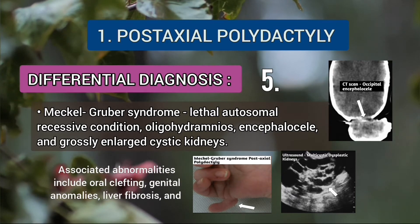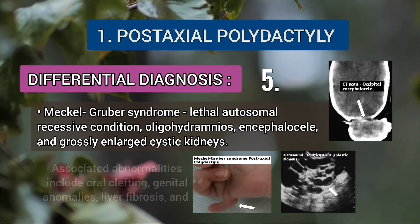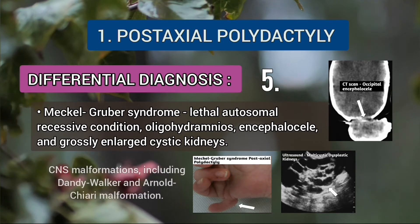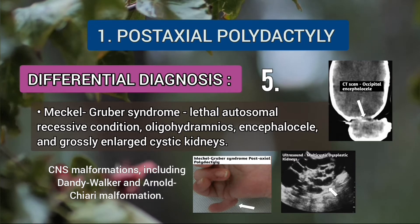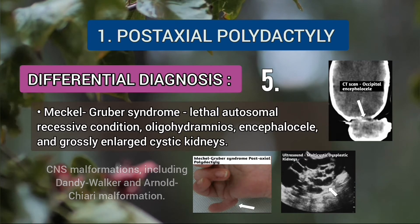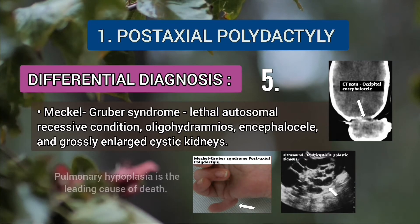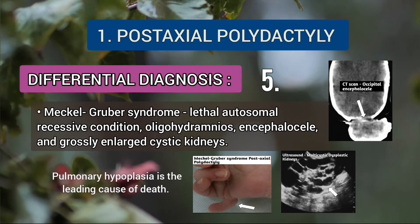Associated abnormalities include oral clefting, genital anomalies, liver fibrosis, and central nervous system malformations including Dandy-Walker and agenesis of corpus callosum. Pulmonary hypoplasia is the leading cause of death. Improvements in ultrasonography have enabled prenatal diagnosis as early as 10-week gestation.